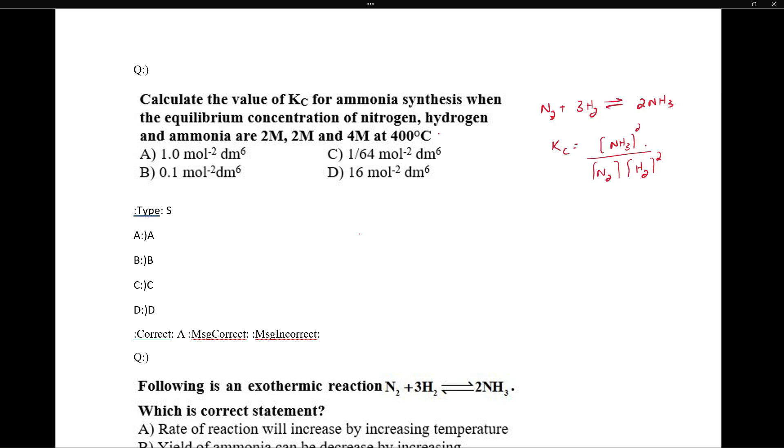When we write the balanced chemical equation for ammonia synthesis, we have to put values in the Kc expression. Ammonia concentration is 4 molar, so it is 4 squared. Nitrogen is 2 and hydrogen is 2 cubed. So when we calculate it, 16 upon 16, it comes to be 1. So correct answer is alpha.